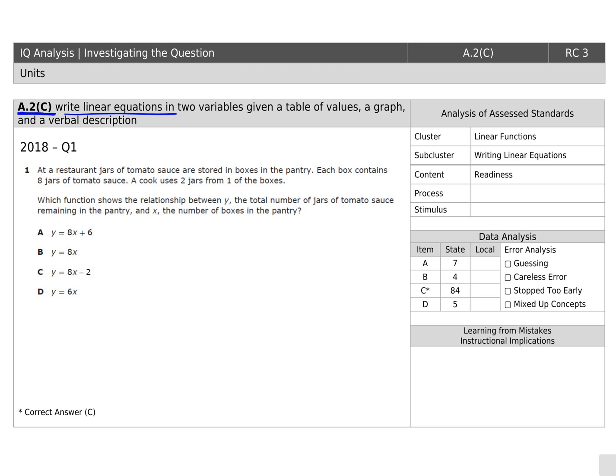In this first problem, we have a word problem talking about a restaurant, and each box contains 8 jars. We know 8, but we don't know how many boxes, so we're going to think that might be the variable. So we'll write 8X. That's telling us that however many boxes we have, we multiply that times the 8 jars in it. Then it tells us that a cook uses 2 jars from one of the boxes, so he would have to take away from those boxes 2 of the jars, so minus 2. And to make an equation, we have the y equals at the beginning, so we can recognize C as the answer choice.